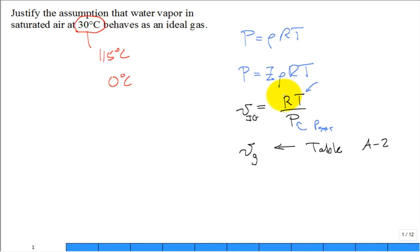We're going to use the saturation pressure P_sat at that temperature, and R is R̄ divided by the molar mass of water vapor. This is the comparison: how close is the specific volume for water vapor if I treat it using the ideal gas equation versus looking it up in the tables?